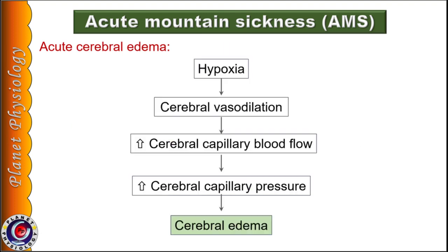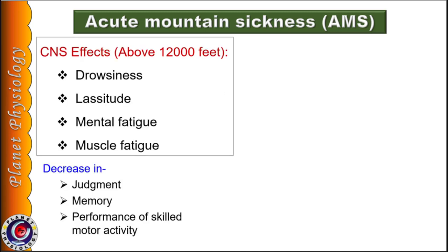Acute cerebral edema results from cerebral vasodilation in response to hypoxia, increasing cerebral capillary blood flow and capillary pressure. Fluid leaks into the brain tissue, leading to cerebral edema with severe disorientation and other effects varying with altitude. When an unacclimatized person rapidly ascends above 12,000 feet, he shows drowsiness, lassitude, mental and muscle fatigue.